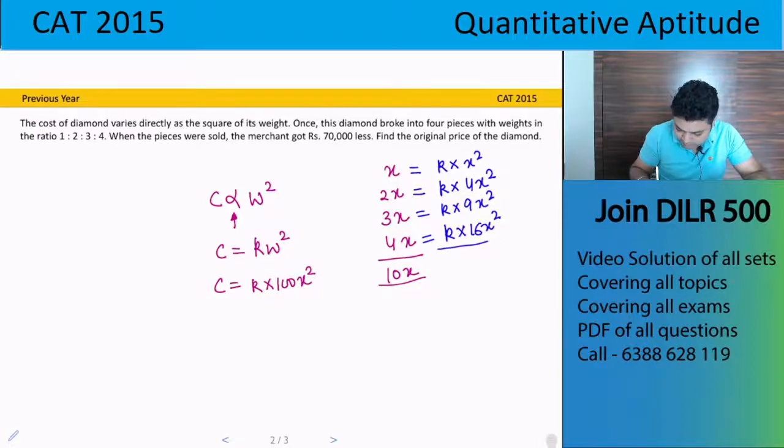So in all the pieces of total cost, how much will it be? 16, 4, 20, 29, 31, 30k x square. And here the cost is 100k x square.